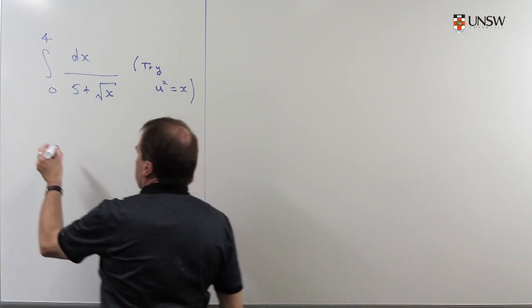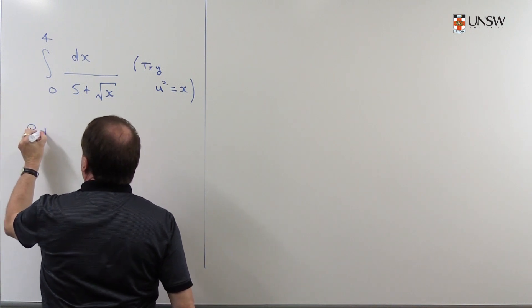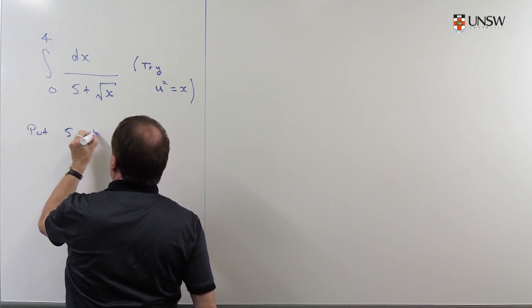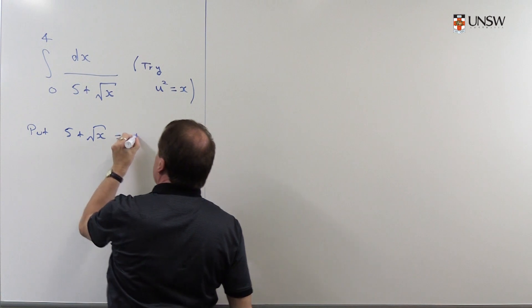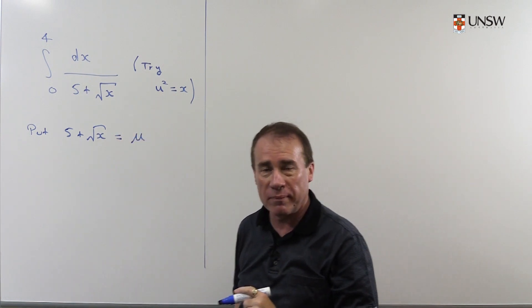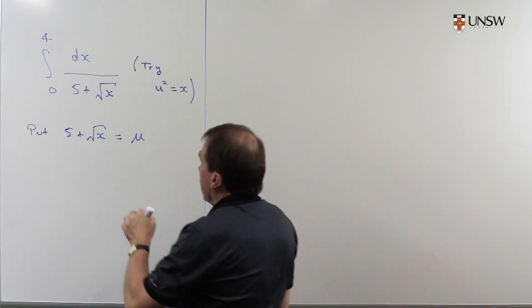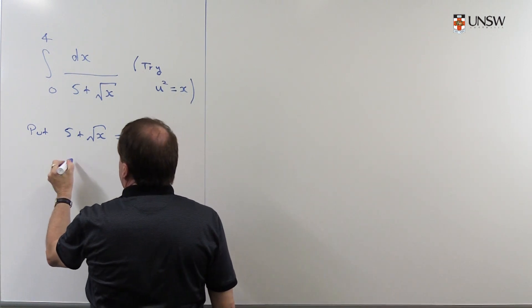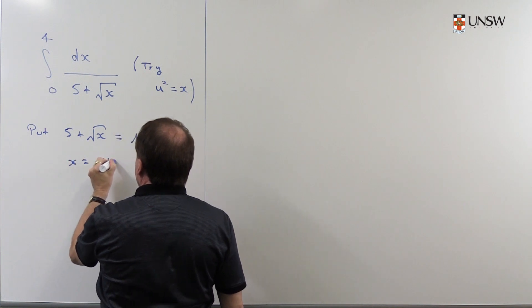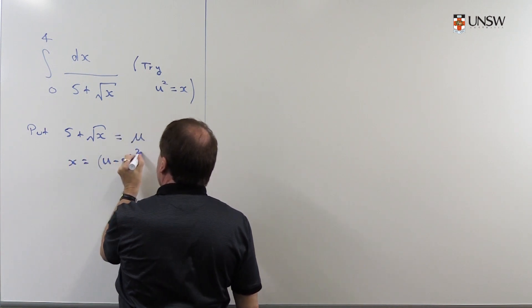I'm going to in fact put 5 plus the square root of x, I'm going to call all of that just u on the bottom there. So I better rearrange this then so that says x then is u minus 5 all squared.